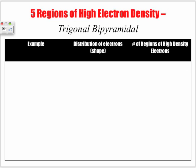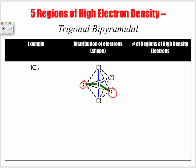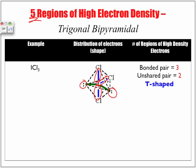Continuing with five regions of high electron density, still looking at trigonal bipyramidal, our next example is ICl3. Notice: one central atom, three surrounding atoms. We have two unshared pairs — so three bonded, two unshared pairs, still a total of five regions. But now the shape is known as T-shaped.